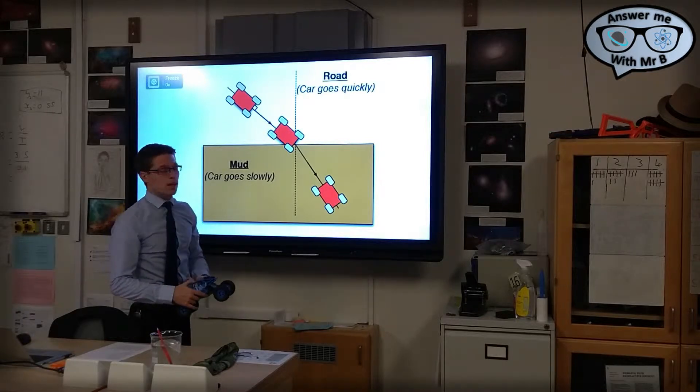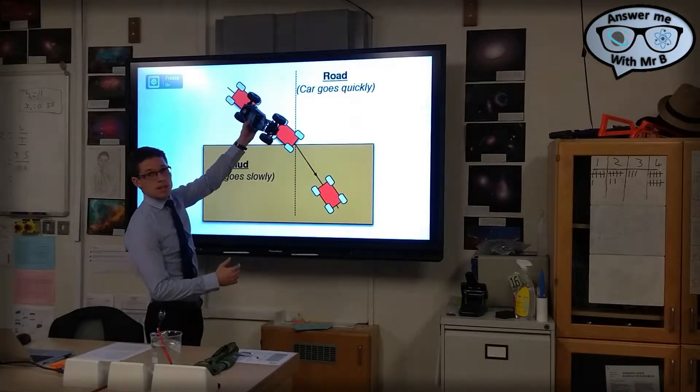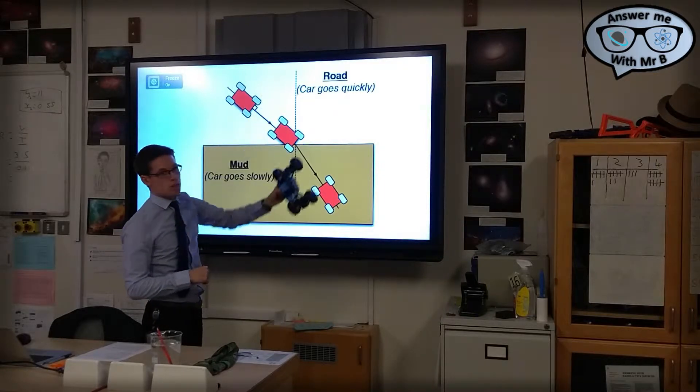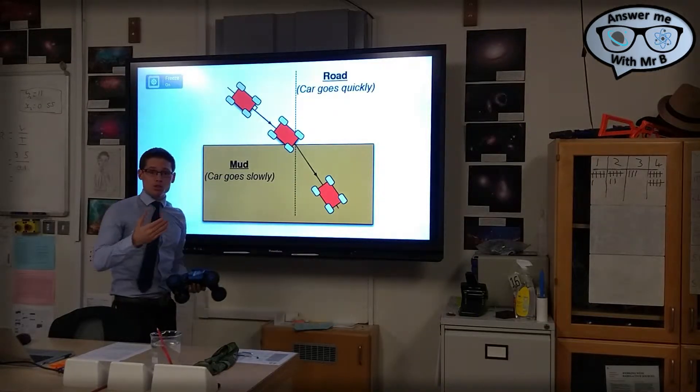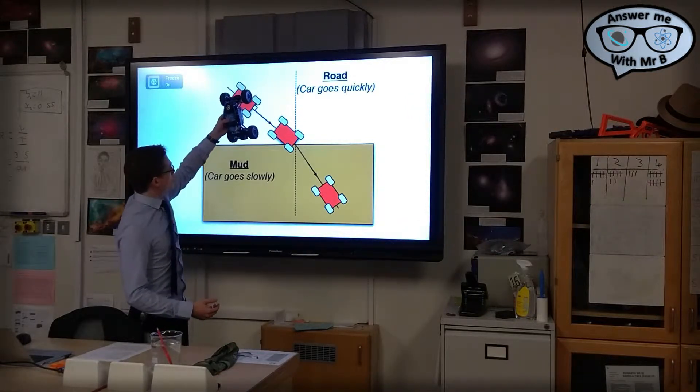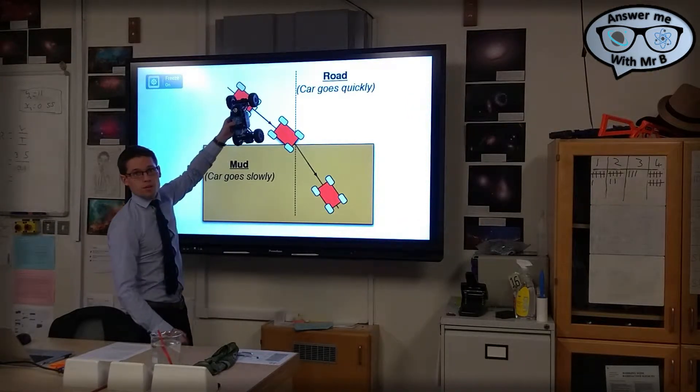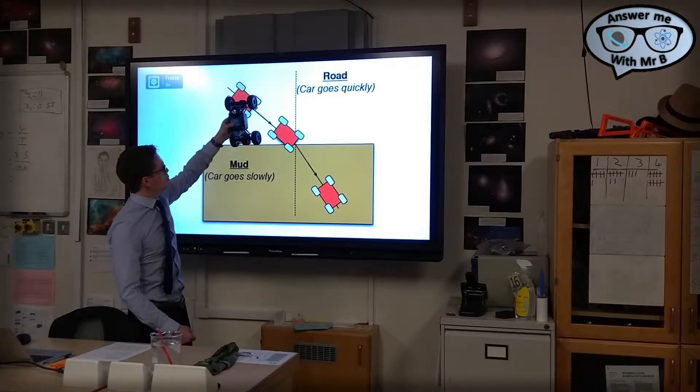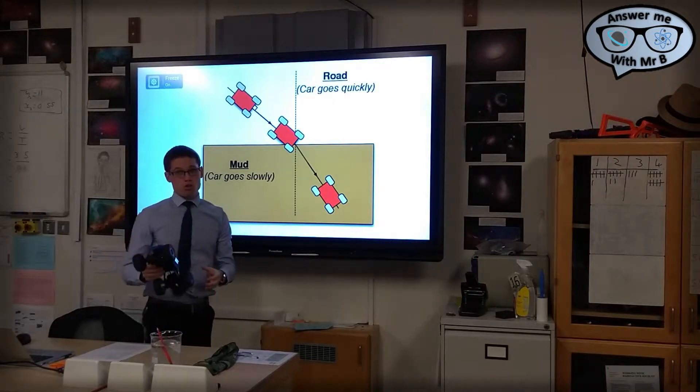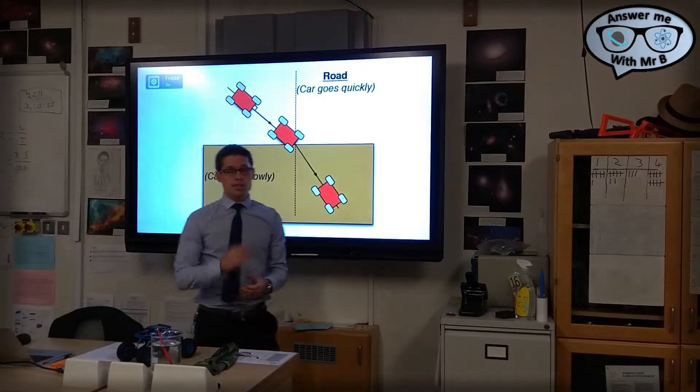Light does exactly the same thing. When it hits a different material at an angle to that material, it changes direction. If you were stupid enough to go directly into the side of the road, then both of the tires would hit the mud at the same time and the car wouldn't change direction. It would just keep going straight. And light does the exact same thing.